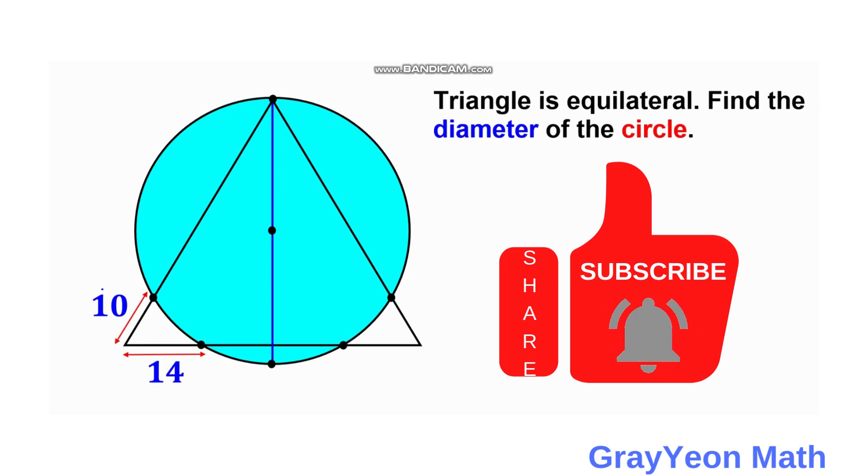Welcome to Grayon Math. We are asked to solve this problem. We have a circle overlapping a triangle and this triangle has a leg that is extending outwards this circle by 10 units and the base extending outside the circle with 14 units and we are required to find the diameter of the circle.